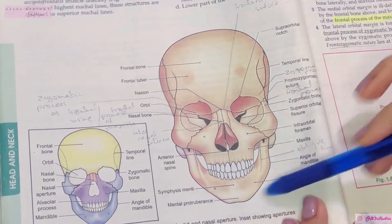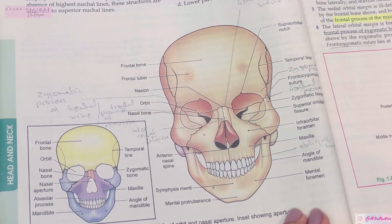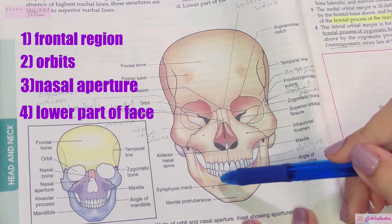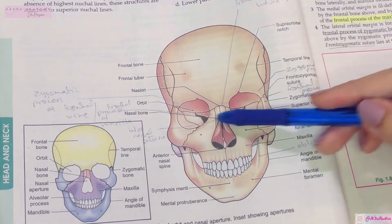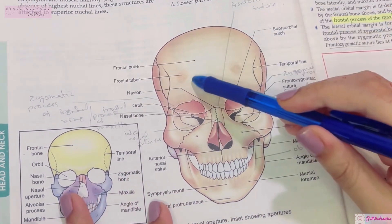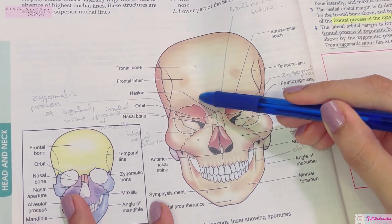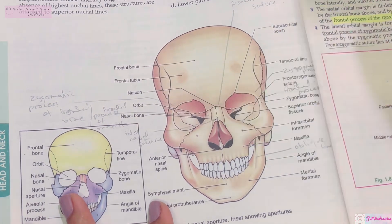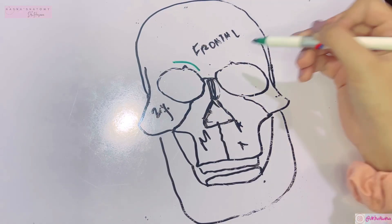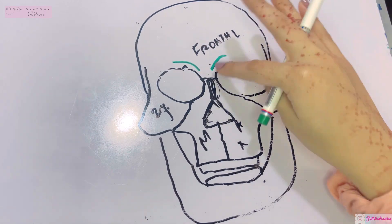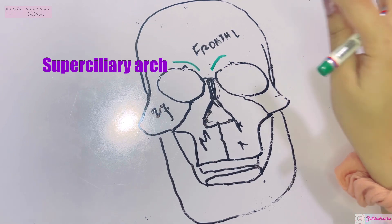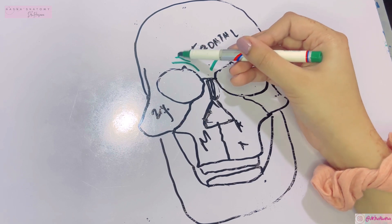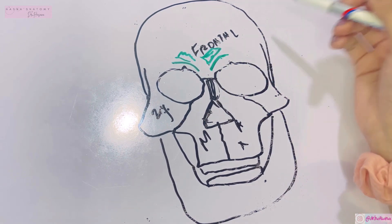The norma frontalis is divided into four regions: the frontal region, the orbital openings, the aperture of the nose, and the lower part of the face. In the frontal region, just above the medial margin of the orbit, there are curved rounded elevations known as the superciliary arches. Just above the superciliary arch is the frontal eminence.